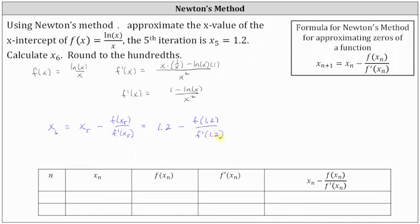I'll show how we can use desmos.com to quickly determine f(1.2), f′(1.2), and x₆, which we'll record in a table. We start with n equals five and x₅ equals 1.2, then determine f(1.2), f′(1.2), and the final calculation to find x₆.